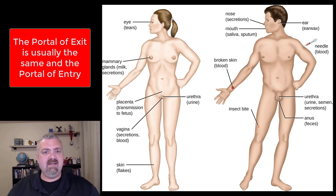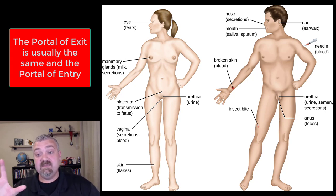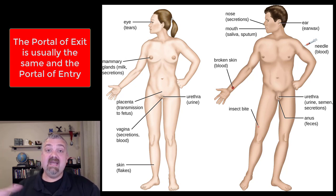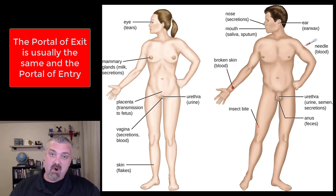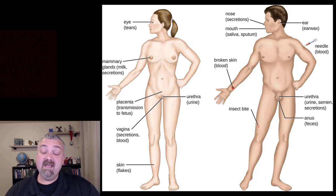Looking at a few specific portals of exit — you see things you might not think of as much, like tears and breast milk. These would be examples of things that can be infectious and can spread disease. We'll talk about the placenta again separately. Skin itself can actually spread disease, but then you have broken skin again — blood coming out of broken skin, biting insects, needle stick injuries, these types of things. Even earwax can actually spread disease. So these are the portals of exit, which are almost always the same as the portals of entry — that's how an organism finds its way into you and then spreads from you to neighboring hosts.